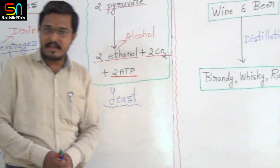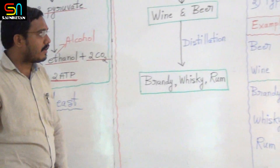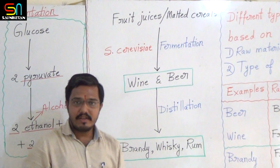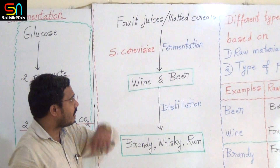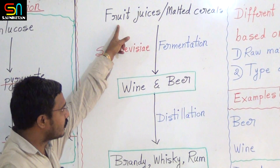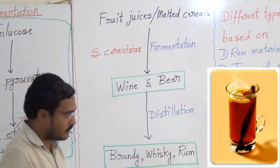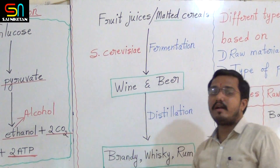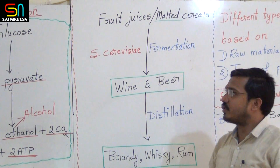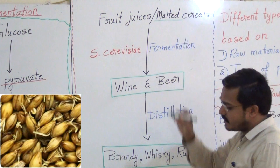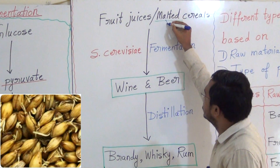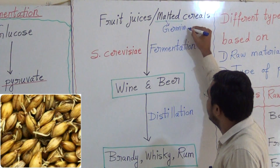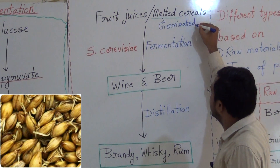Now let us see how alcoholic beverages are produced. The raw materials used are fruit juices and malted cereals. Malted cereals means germinated cereals. These are the raw materials used here.